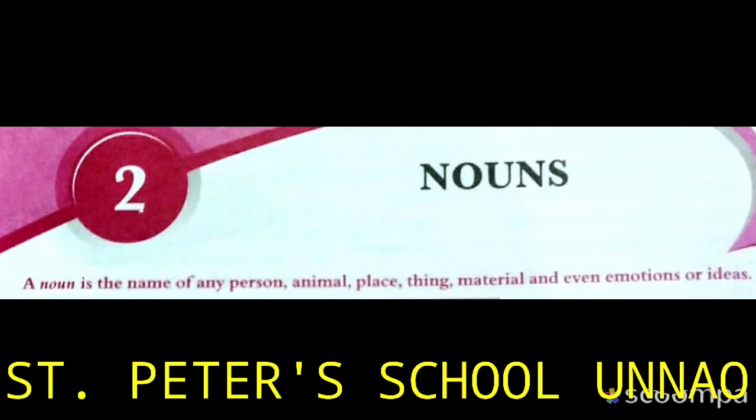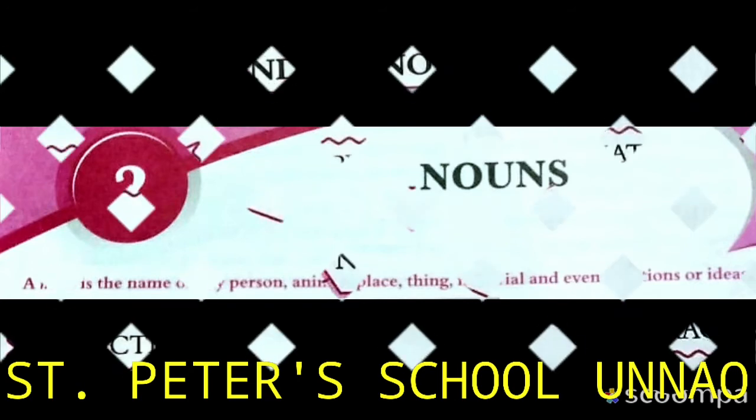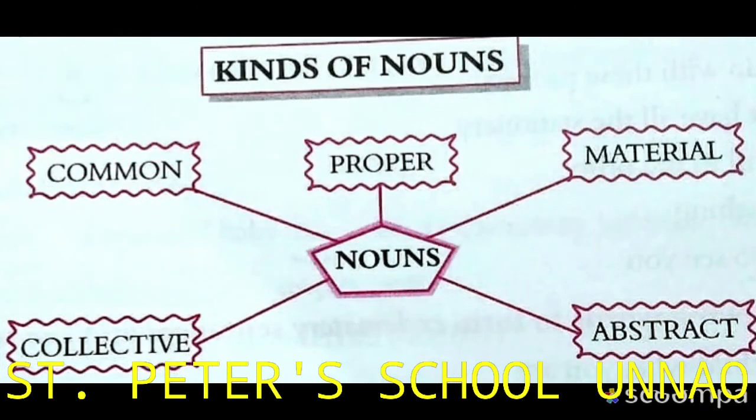So I hope the definition of noun is clear. Now let's talk about the categories. There are five types of noun.